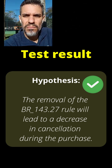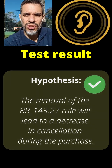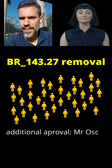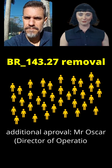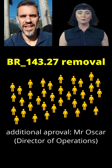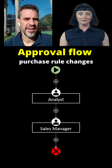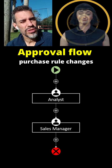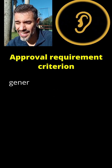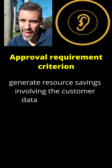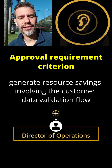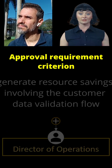Then let's revoke this rule for all sales — implement this change, but first obtain approval from Oscar. The approval flow established for purchase rule changes does not require approval from the director of operations, Mr. Oscar. Why would you like to include that approval? Because this rule was created to generate resource savings involving the customer data validation flow — the operations department will be impacted and they need to evaluate if I'm not missing anything.